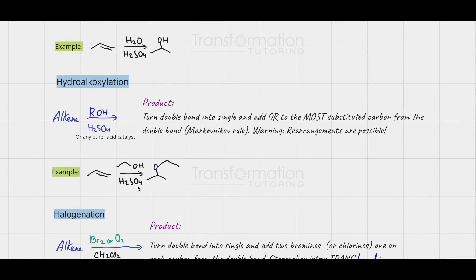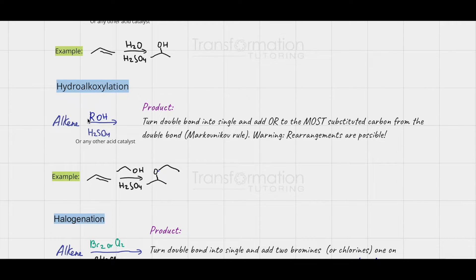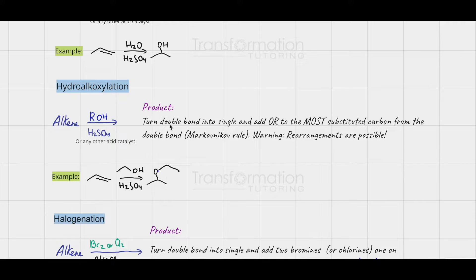The next reaction is alkoxylation. It's like the acid-catalyzed hydration, but instead of water we have an alcohol — ROH, where R is any hydrocarbon chain such as CH3OH or even a ring. We start with an alkene and the reagent is ROH with any acid catalyst. We do exactly the same thing as before, but instead of adding OH, we add OR to the most substituted carbon. For example, with ethanol and H2SO4, we turn the double bond to a single bond and add OCH2CH3 to the most substituted carbon. The less substituted carbon gets a hydrogen.